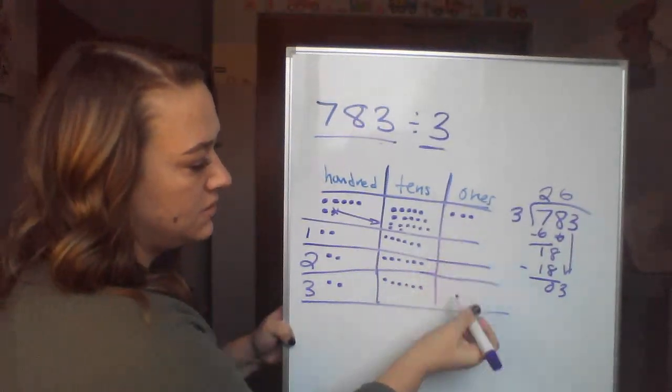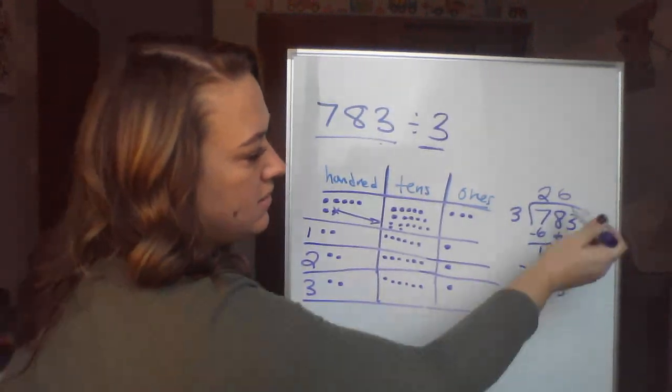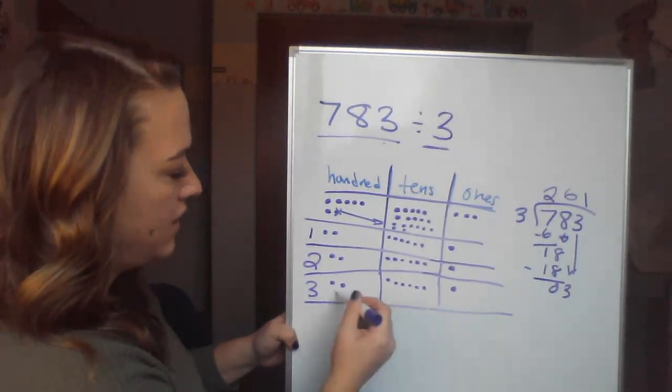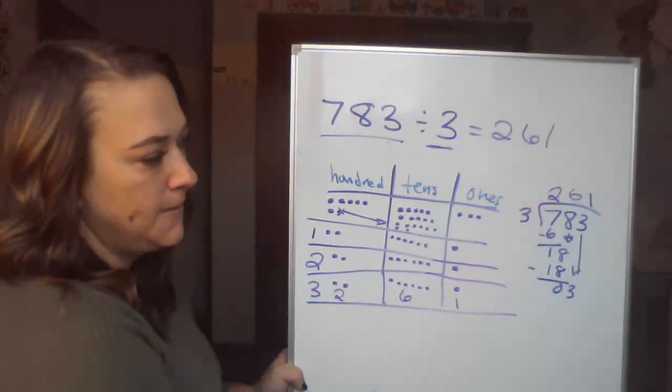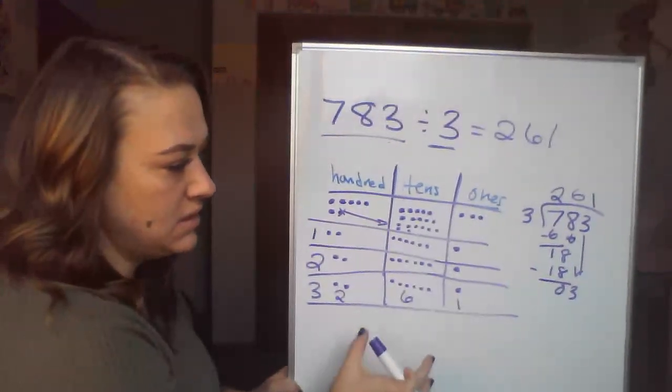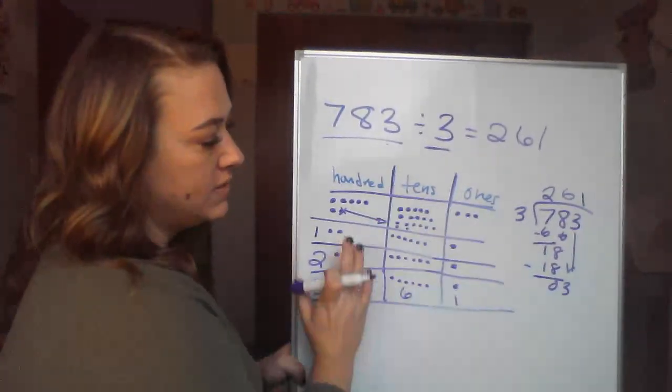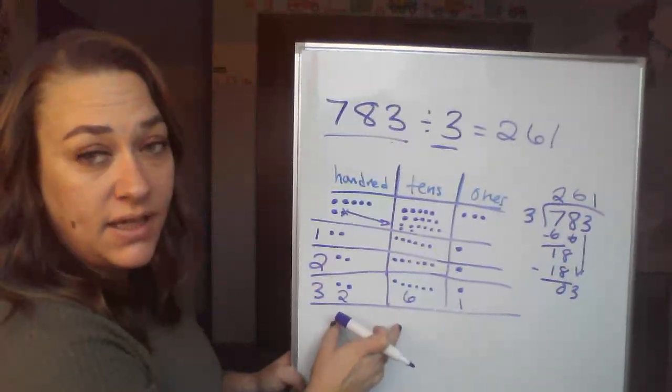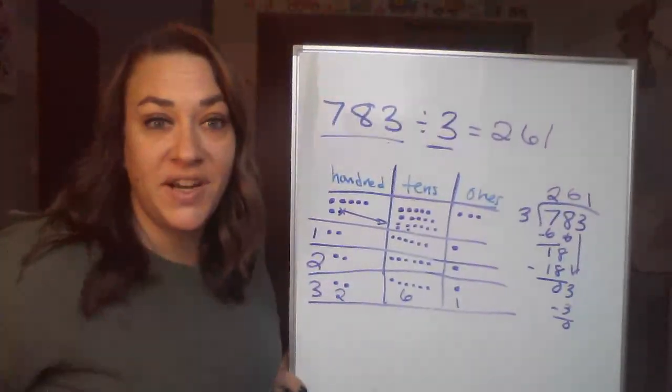And now I bring down my 3, and that's my 3 ones I have left. So my 3 ones, I'm able to distribute it evenly. How many groups of 3 can I make out of 3? So I have 2, 6, and 1, which is my quotient of 261. So this is just that visual. If this is making sense to you, this is extra time. It makes you understand it a little bit more. But remember, this is our ultimate goal. This is what we want to try to be able to do.